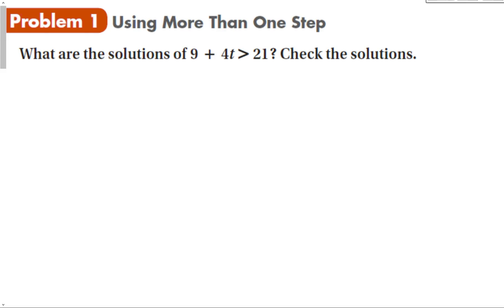In this problem, we can see that there is more than one thing we're going to have to do in order to isolate the variable. In order to get 4t by itself, the first thing I'm going to do is subtract 9 from both sides. Remember the rule we talked about in the last section: if you divide both sides of an inequality by a negative number, you have to reverse the sign.